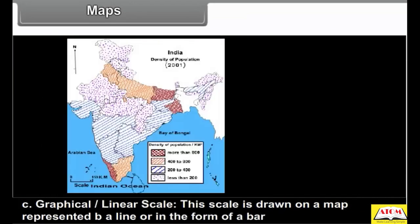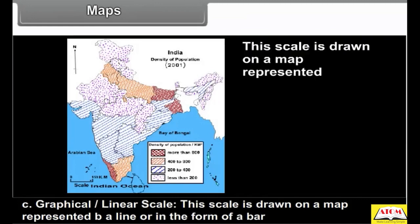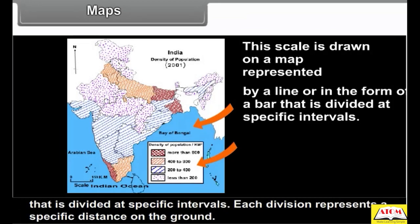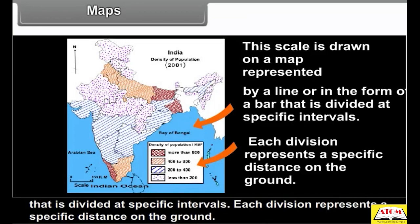C. Graphical or linear scale: this scale is drawn on a map represented by a line or in the form of a bar that is divided at specific intervals. Each division represents a specific distance on the ground.